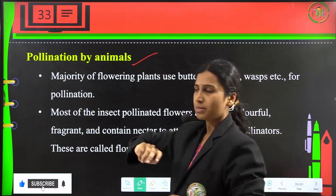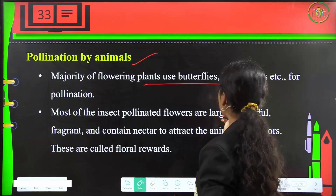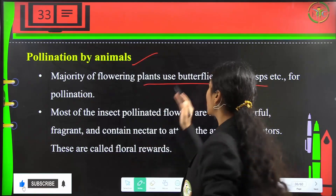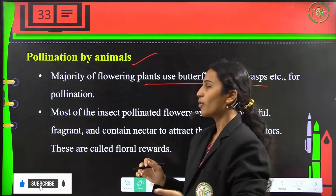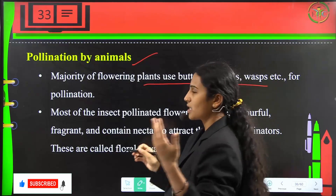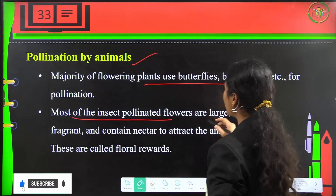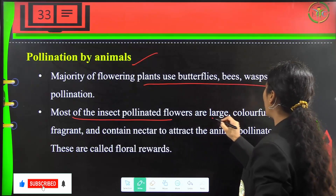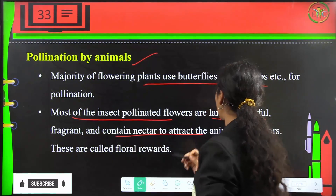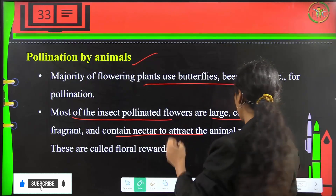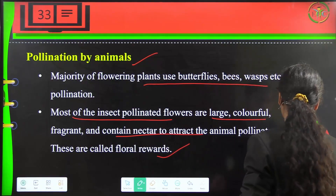Pollination by animals is carried out by majority of flowering plants using butterflies, bees, and wasps as biotic agents. Most insect-pollinated flowers are large, colourful, and fragrant, and contain nectar to attract animals for pollination. This offering is called a floral reward.